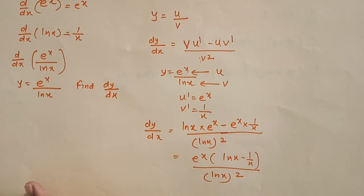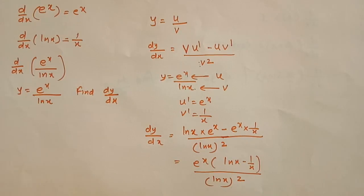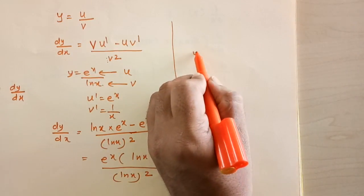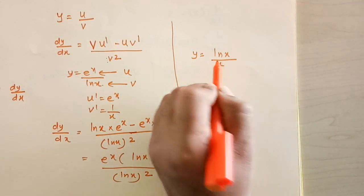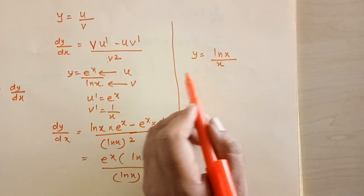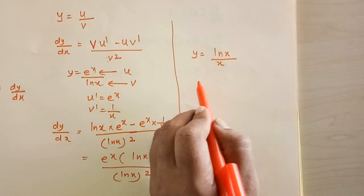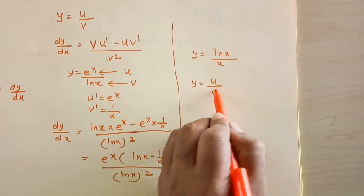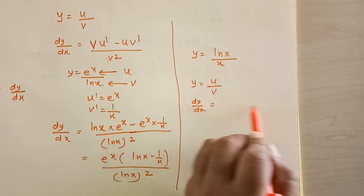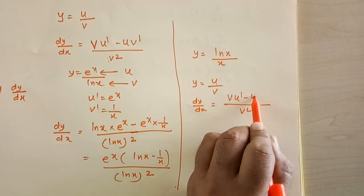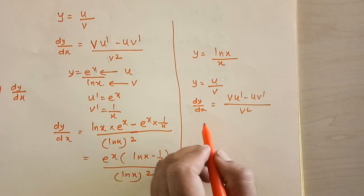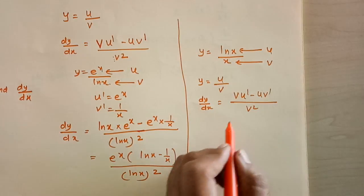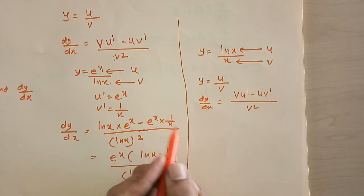That's the derivative using quotient rule for the first example. Here is another example: differentiate y equals ln x over x — a favorite exam question. Using quotient rule, y equals u over v, dy/dx equals v squared in the denominator, v times u dash minus u times v dash in the numerator. Here, u is ln x and v is x. You can pause and try on your own.